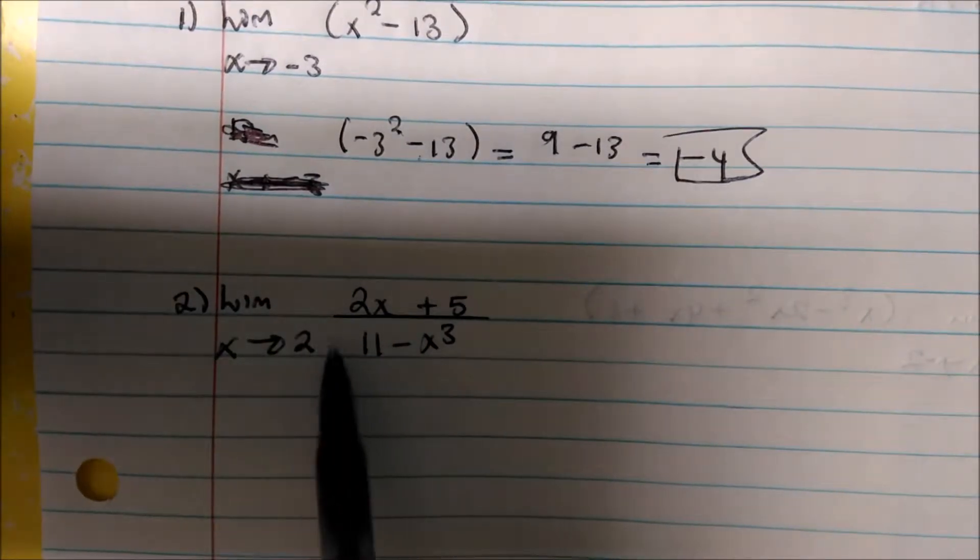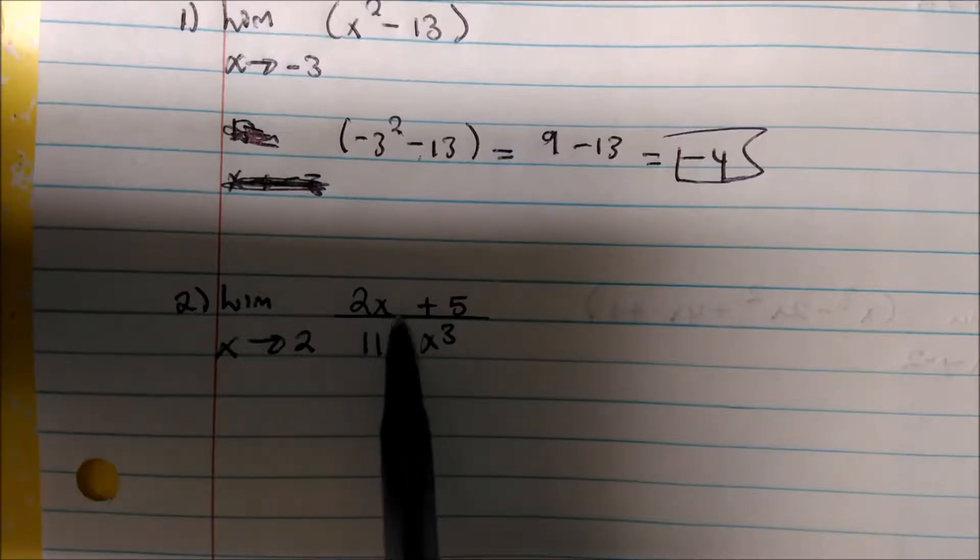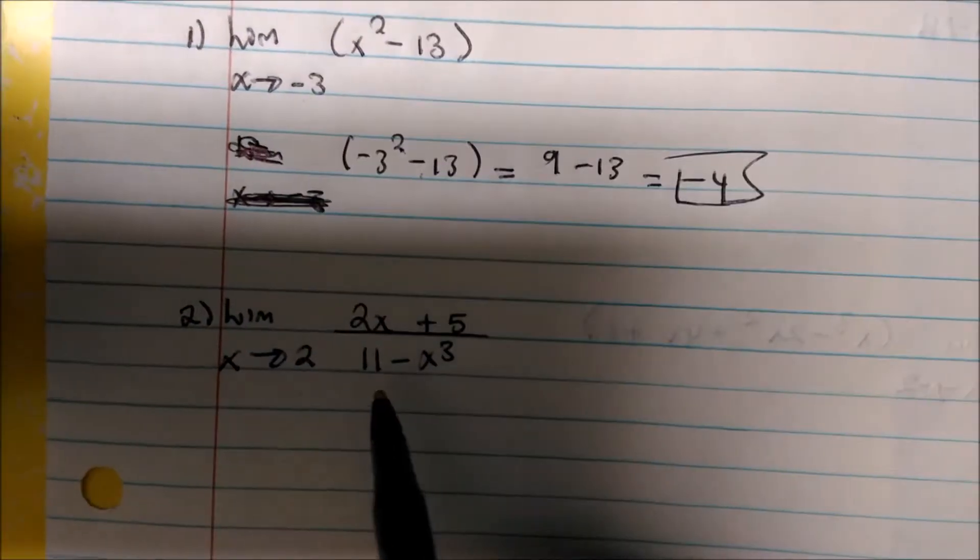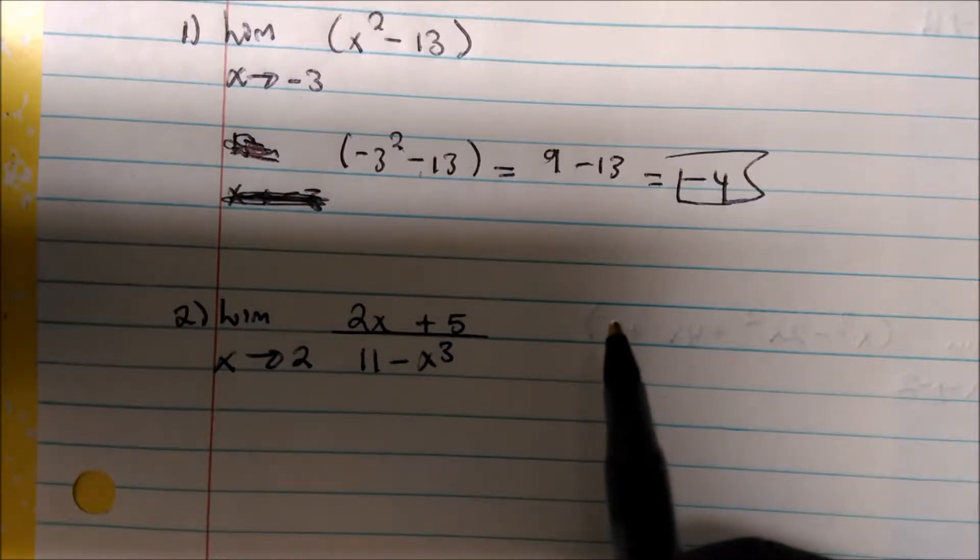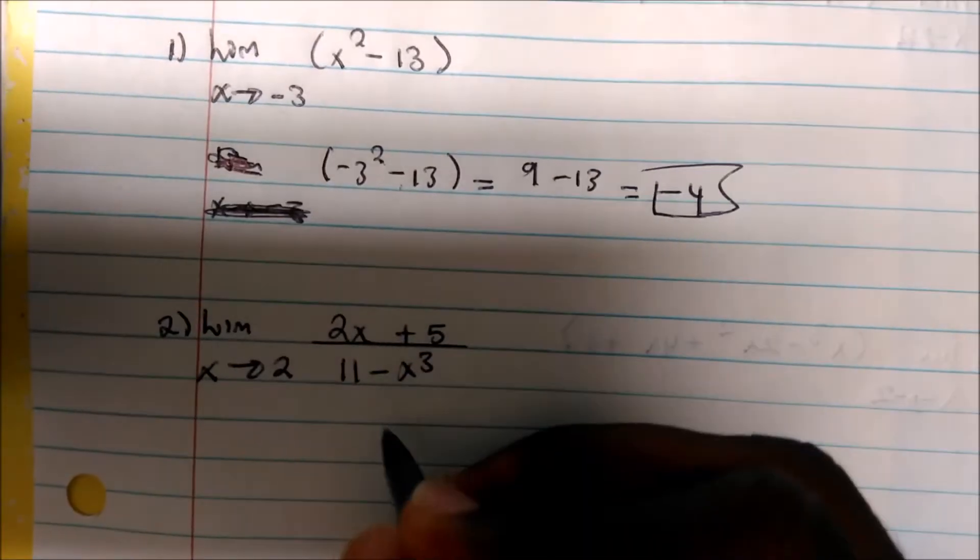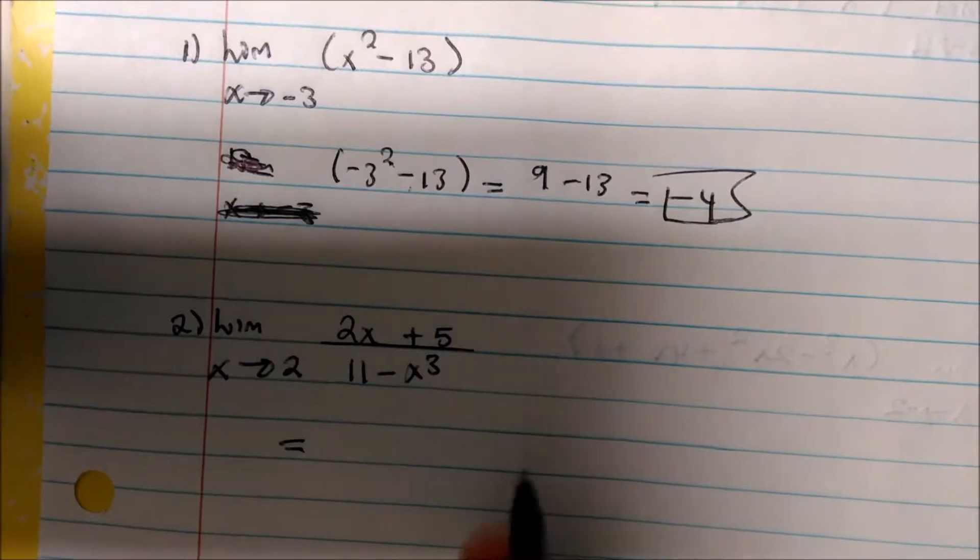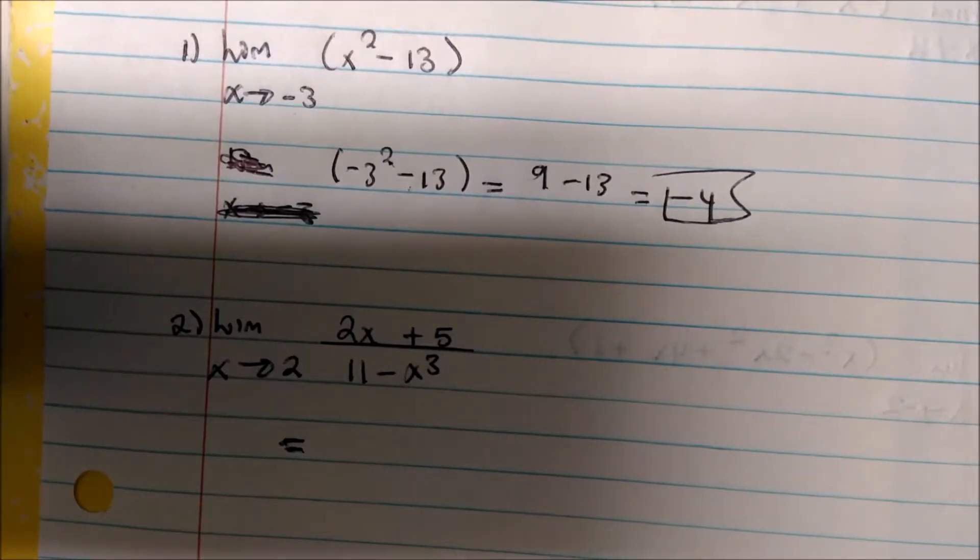Number 2 says the limit as x approaches 2 of a rational function, 2x plus 5 over 11 minus x cubed. Well, for this again, if we plug in 2, we don't get what we call an indeterminate form, which is 0 over 0, infinity over infinity. Something like this, we could just plug in and see what happens. So I'm not going to write my notation because I'm going to plug in the values.